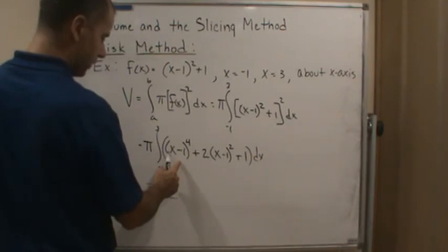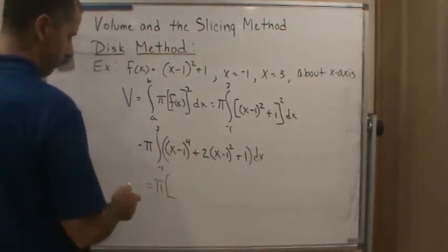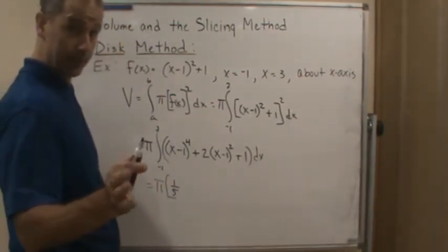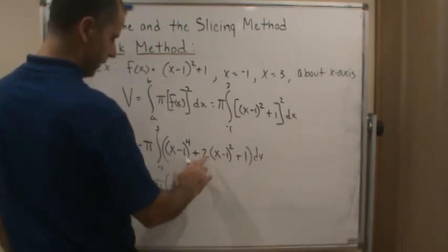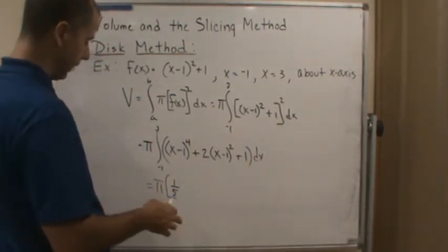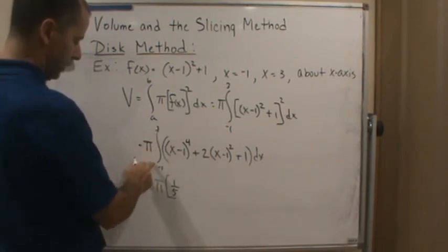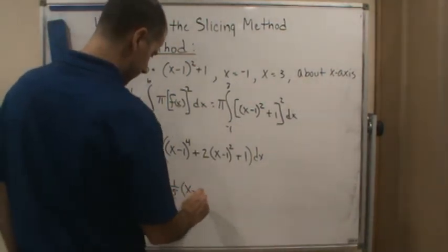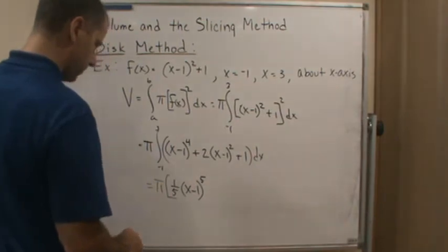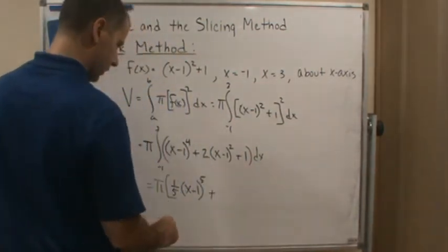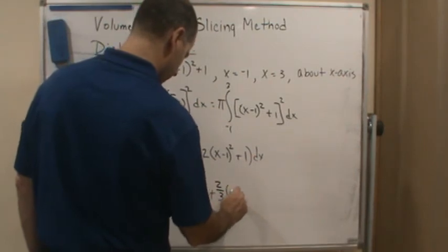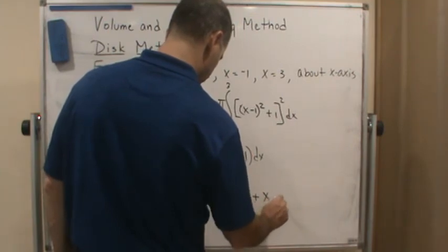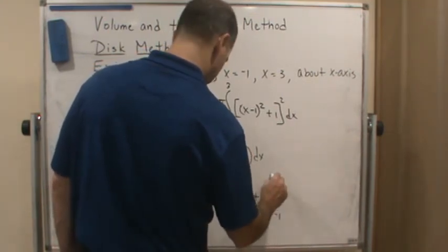You could do a u substitution here too if you want. The u substitution wouldn't be a bad idea to use, and then put x back when you're done or change the limits of integration. So you get one-fifth x minus 1 to the 5th plus two-thirds x minus 1 to the 3rd plus x, from negative 1 to 3.